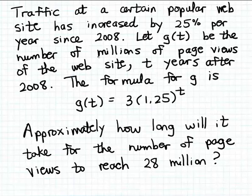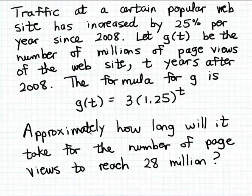We're going to let G(t) be the number of millions of page views of this website t years after 2008. We know that the number of web views has been growing by 25% each year, so the formula for this function G turns out to be an exponential function: G(t) = 3 times 1.25 raised to the t power. What we want to know is approximately how long it will take for the number of page views to reach 28 million.